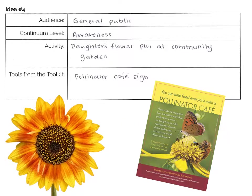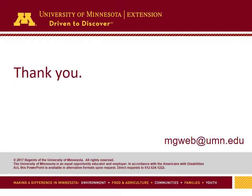Lastly, my daughter wants people to notice her pollinator-friendly sunflowers in the community garden plot. The general public will be walking by her plot, so we'll focus on building awareness about pollinators and request a pollinator cafe sign. As always, if you have any questions about the materials, would like to tell us how you use this information, or to provide feedback about this toolkit, please contact the Master Gardener Leadership Team at mgweb.umn.edu. We look forward to seeing the great work you do with these materials. Thanks for taking the time to become trained and for making a difference in your local community through the Master Gardener Volunteer Program.